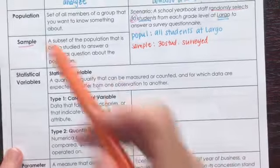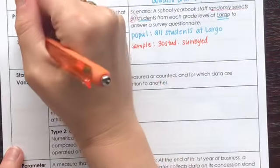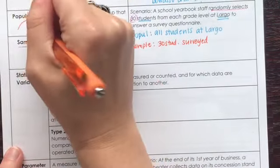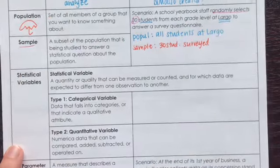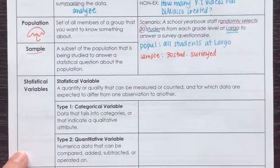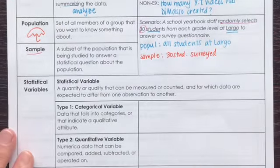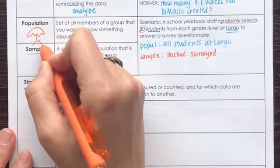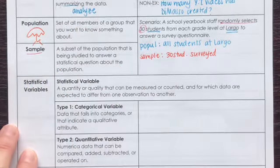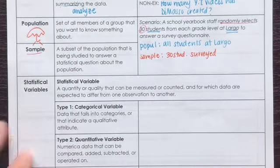You can think of population as being like your umbrella — it's the big overall group. The sample is like one little piece of that larger population.